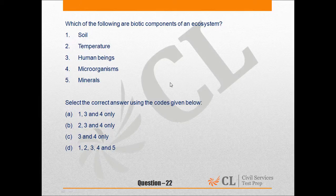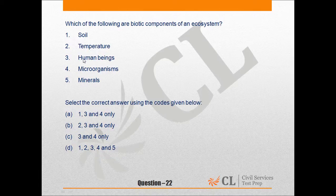Question number 22. Which of the following are biotic components of an ecosystem? Number 1: Soil. 2: Temperature. 3: Human beings. 4: Microorganisms. 5: Minerals. Select the correct answer using the codes given below.